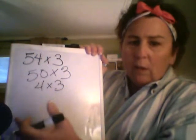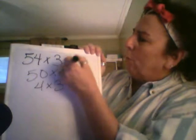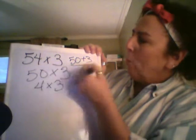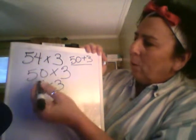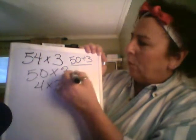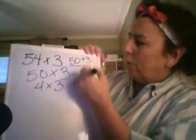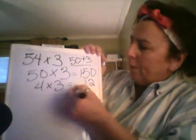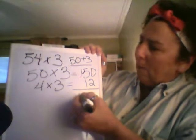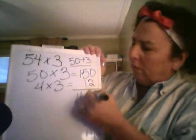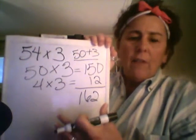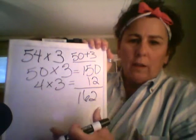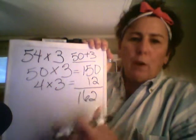Remember when we were talking about place value and I talked about how it was so important for the kids to be able to see the expanded form of the number? Well, this is the reason why. Because when the students have 50 times 3 and they know that this is 150, and then they have 4 times 3 and they know that this is 12, then they can very quickly come up with the answer of 162. This is not the standard algorithm — this is what's called partial products.